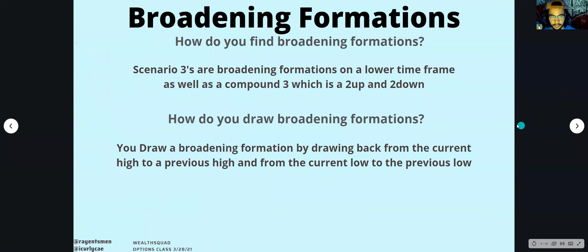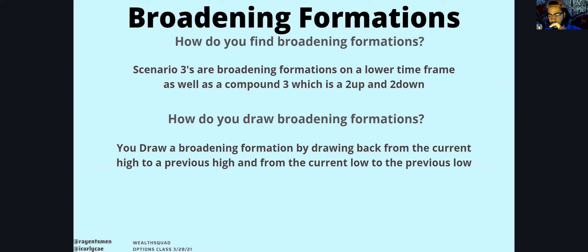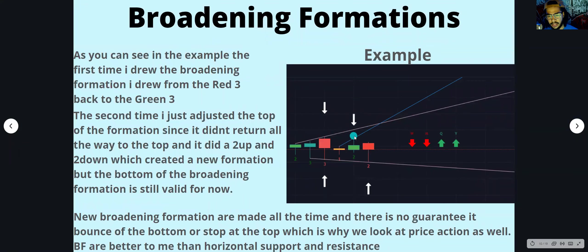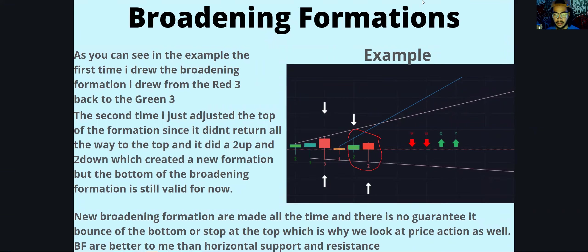How do you find broadening formations? Scenario threes are broadening formations on a lower time frame, as well as compound threes. A compound three is two candlesticks put together — a two-up and a two-down combined make a compound three. How do you draw your broadening formation? You draw from the current high to a previous high, and from the current low to a previous low. Those two lines together are your broadening formation.